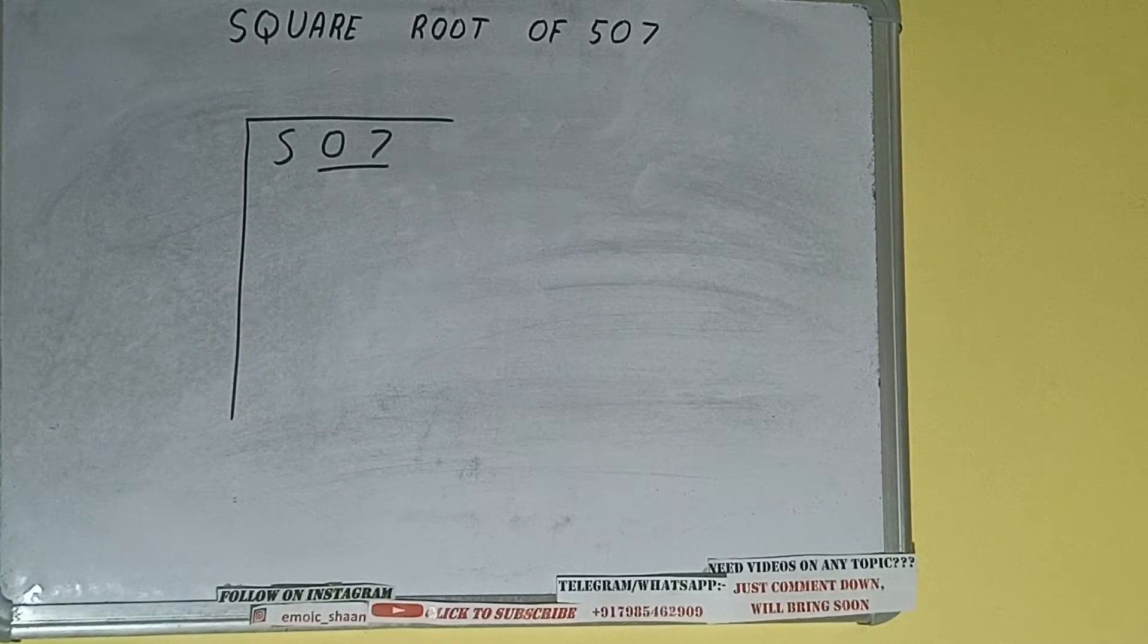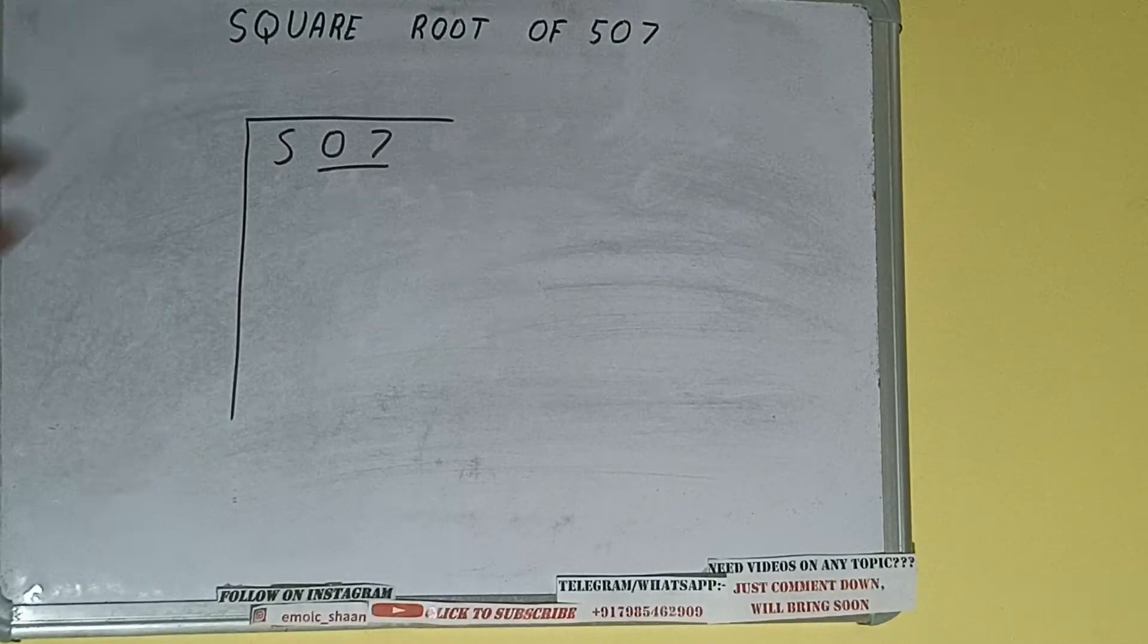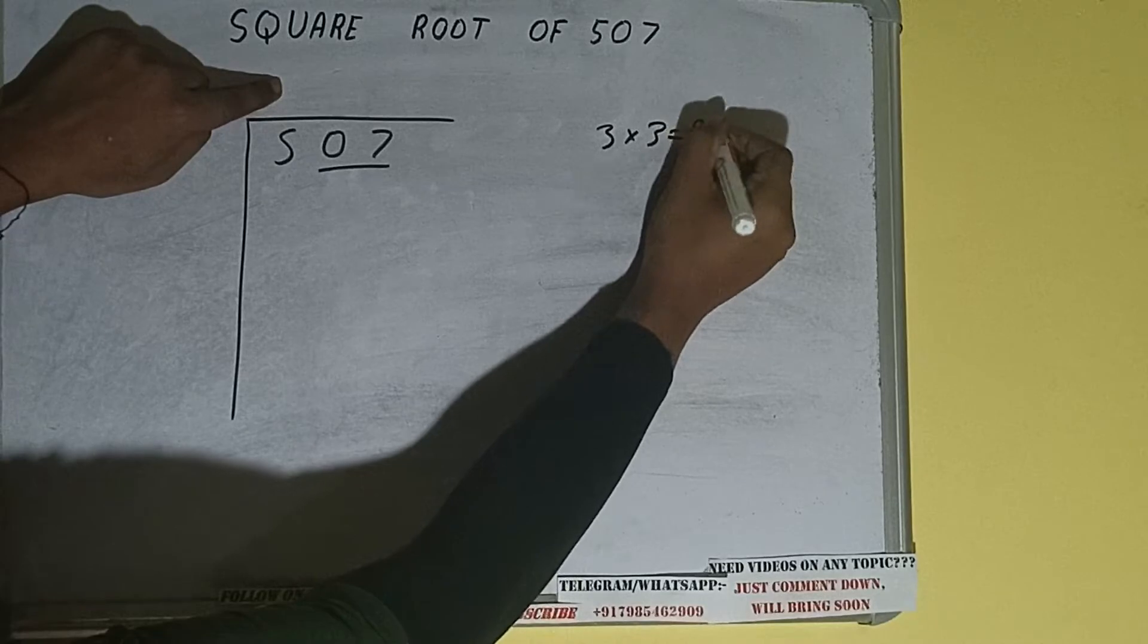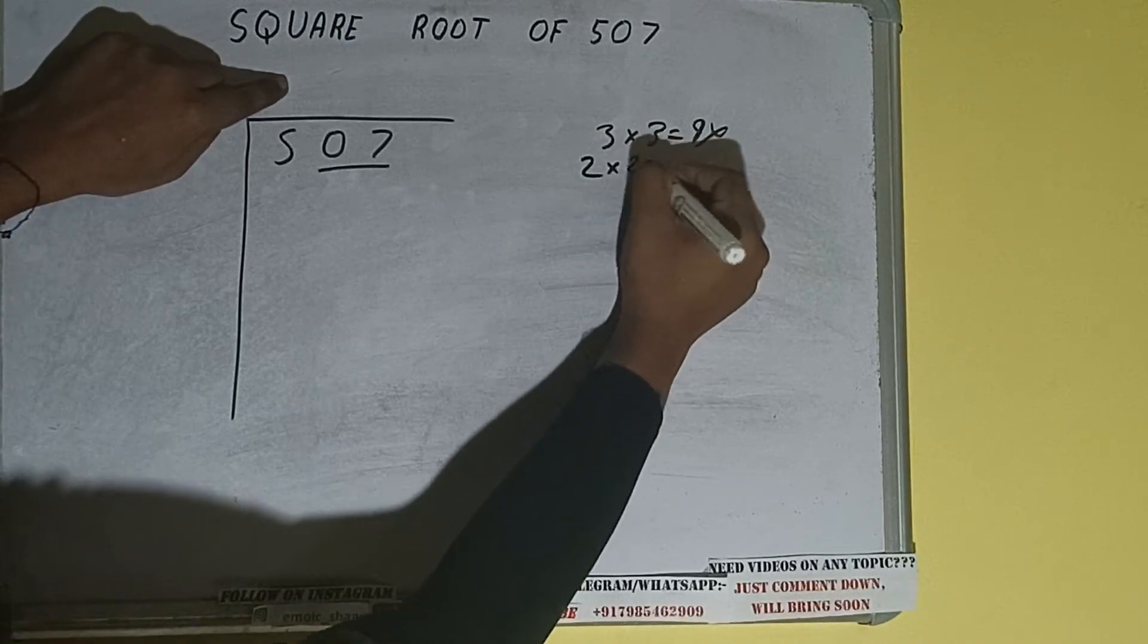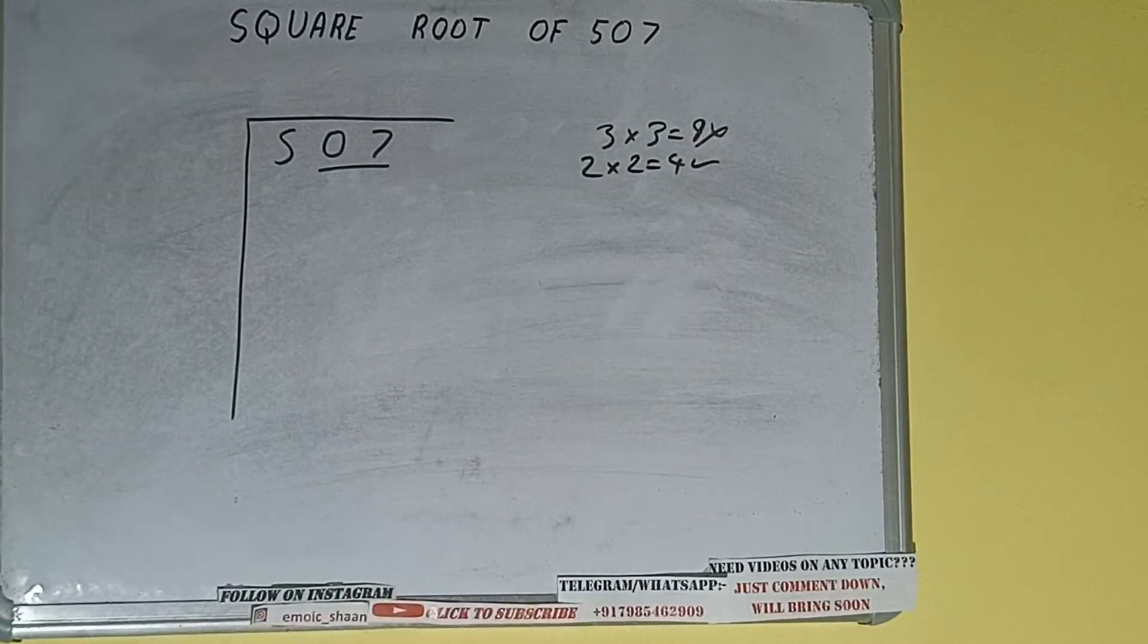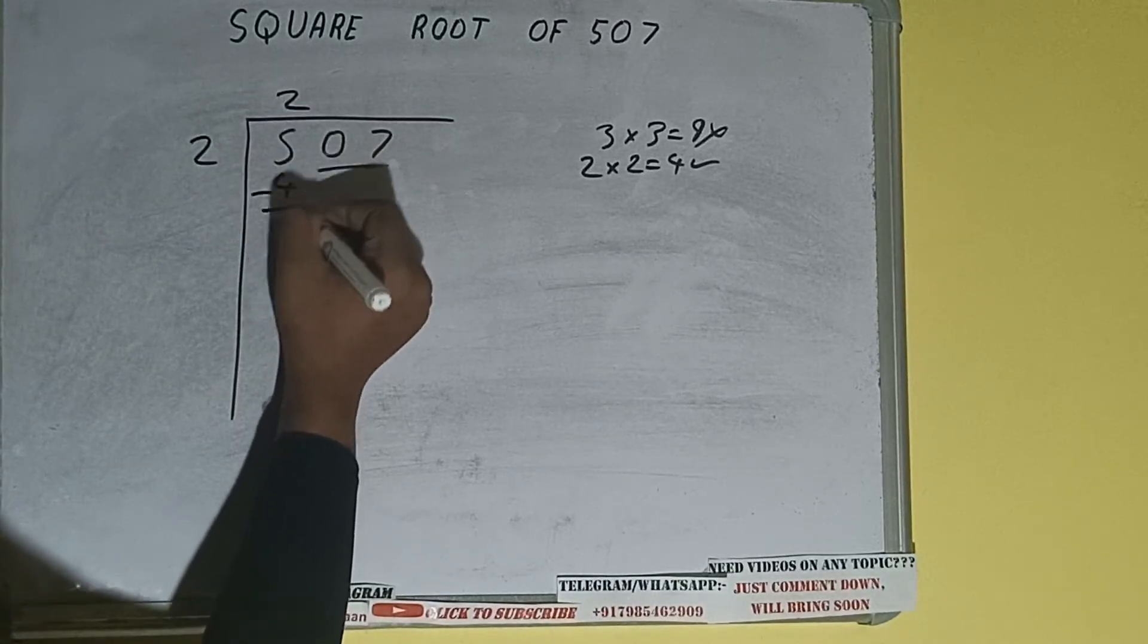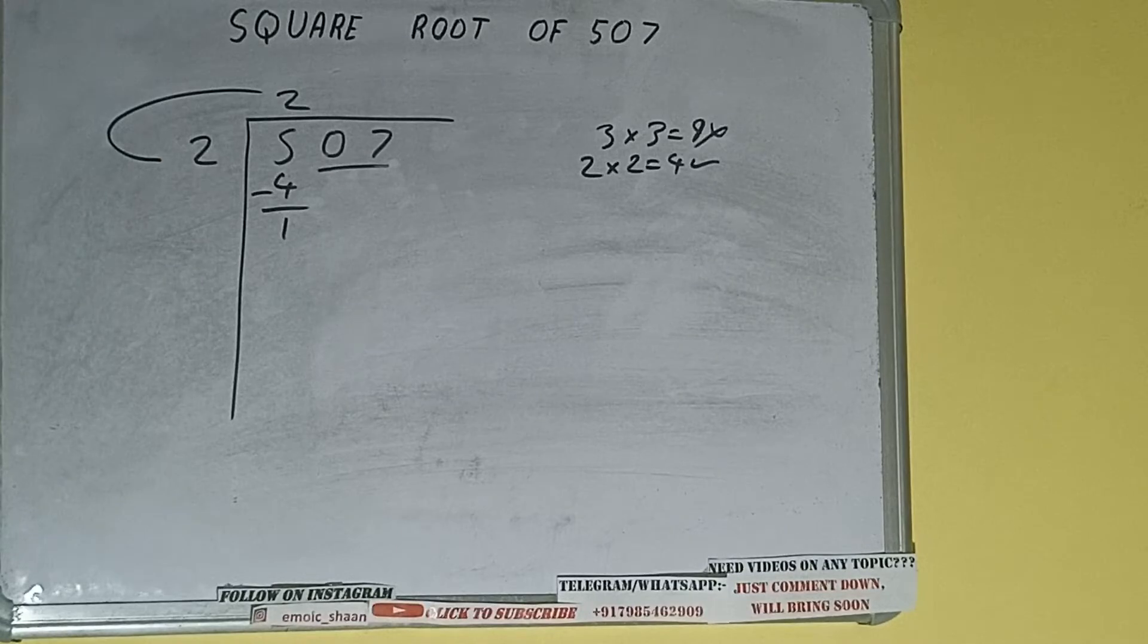The rule is whatever number we write here, we have to write here also. So if we write 3 here and 3 here, it will be 9, which is greater than 5, so we cannot use it. If we write 2 here and 2 here, it will be 4, which is good to use. So 2 here and 2 here, 4 subtract, 1 will be left. We did 2 times 2, so add both. So 2 plus 2 will be 4.